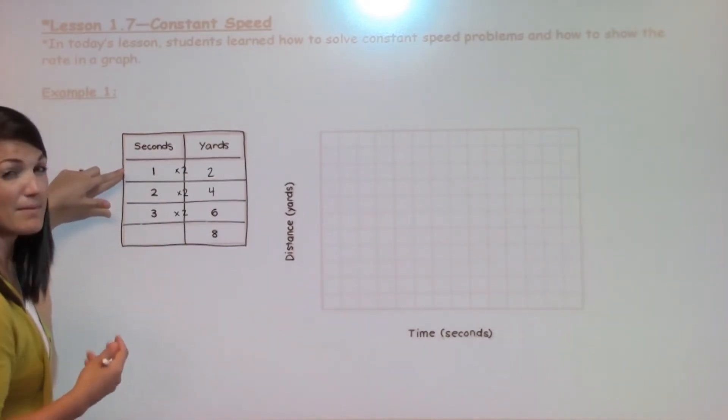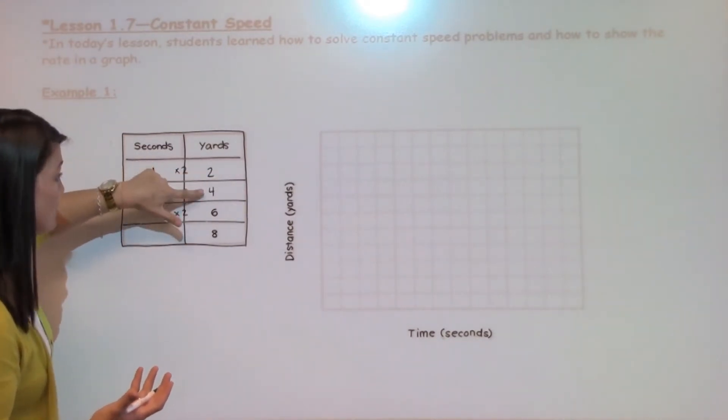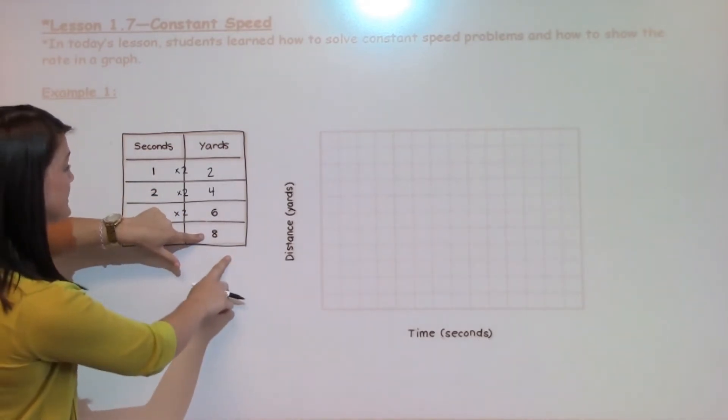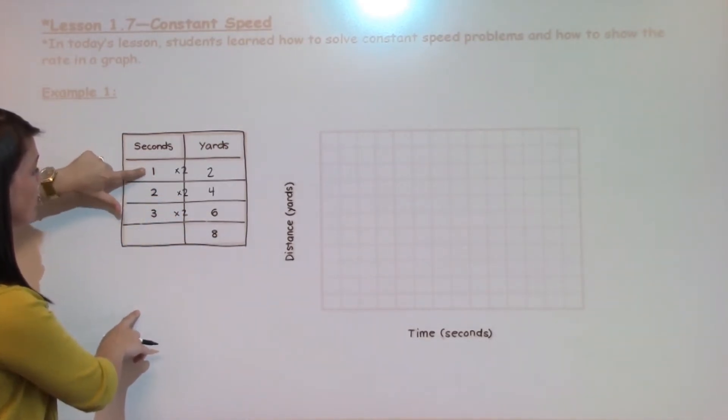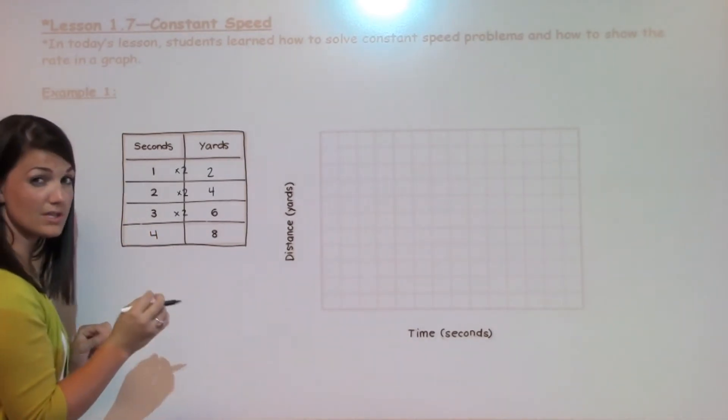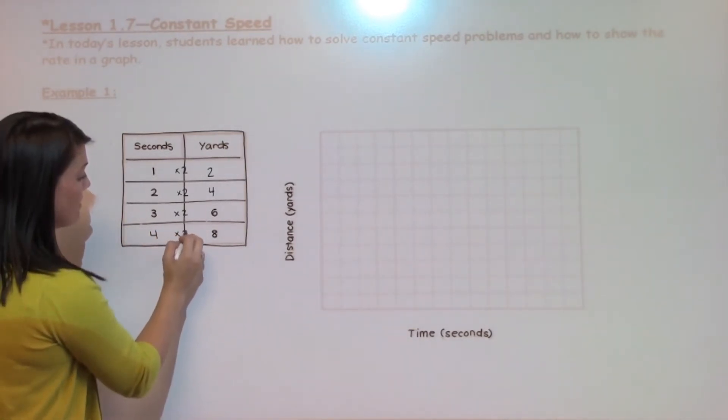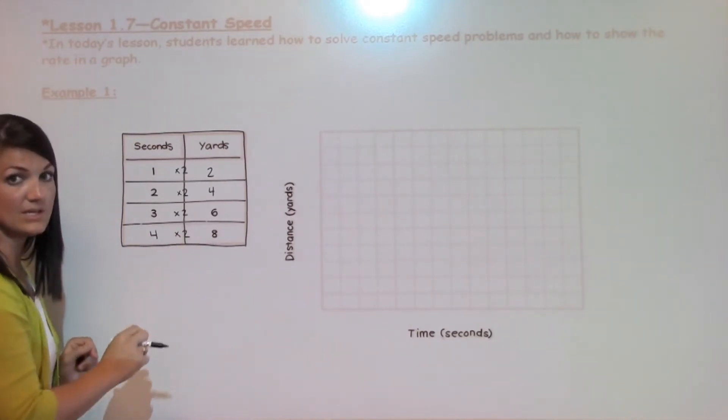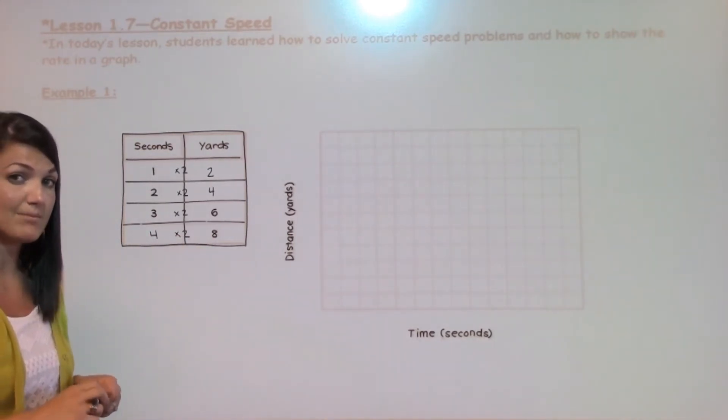Now I can see by the pattern, it is going 2, 4, 6, 8 on the yard side, and on my seconds it goes 1, 2, 3, and then it should be 4. Now I want to check and make sure that is correct by using my math. 4 times 2 does equal 8, so I know that I filled out my table correctly.